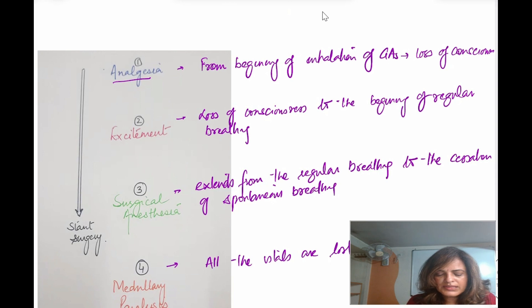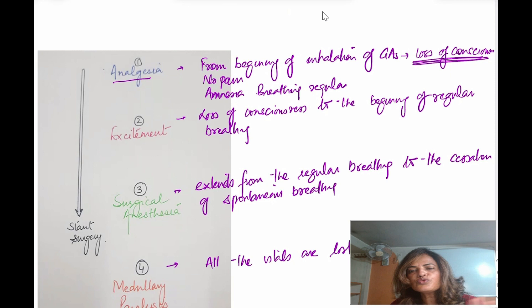What else you will be seeing in stage one? Along with analgesia, there will be no pain. Amnesia will be there and breathing will be regular. There is loss of consciousness. But in between, the beginning of inhalation to the loss of consciousness, the patient will be conscious. In this analgesic phase, the person will be conscious and can hear and see. We can do a few minor procedures in this stage, but usually we do not, because it is difficult to maintain this phase of analgesia.